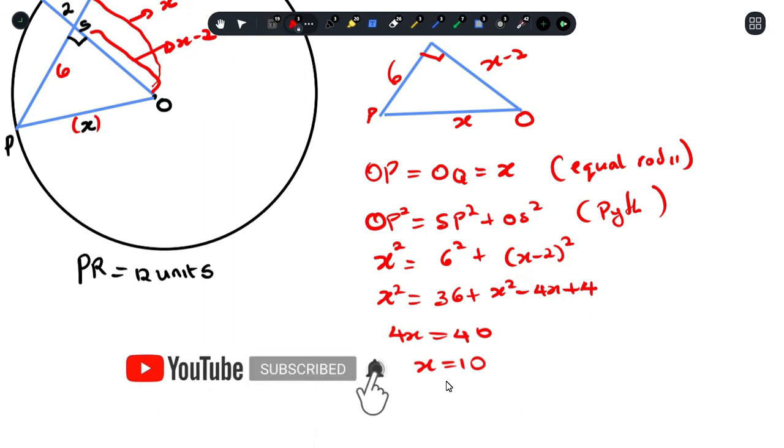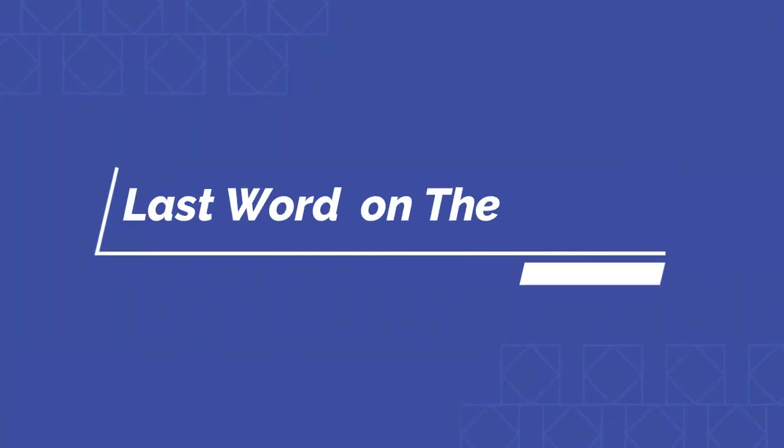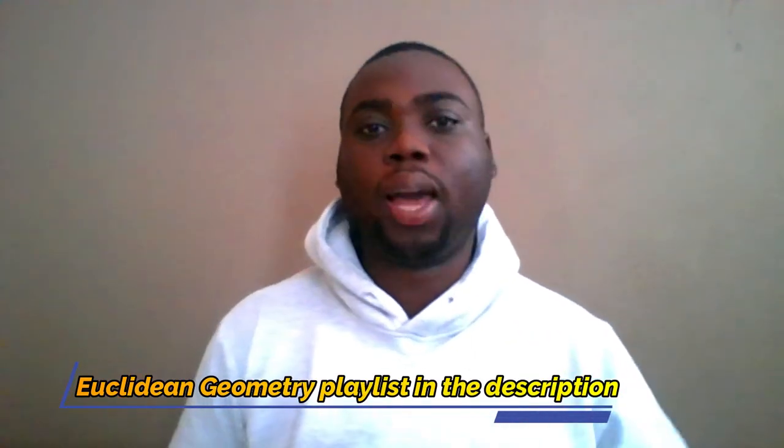And this is how you can use the first theorem to answer a particular question. With this, you should have a better understanding of how to treat the first theorem of Euclidean geometry. Now, the theorems are not used in isolation. I'm going to try my best to cover all theorems that you're going to need in Euclidean geometry. And at the end of every single one of them, I'll do a question to explain how the theorems can work in tandem. Please don't forget to like and subscribe. And that's it.